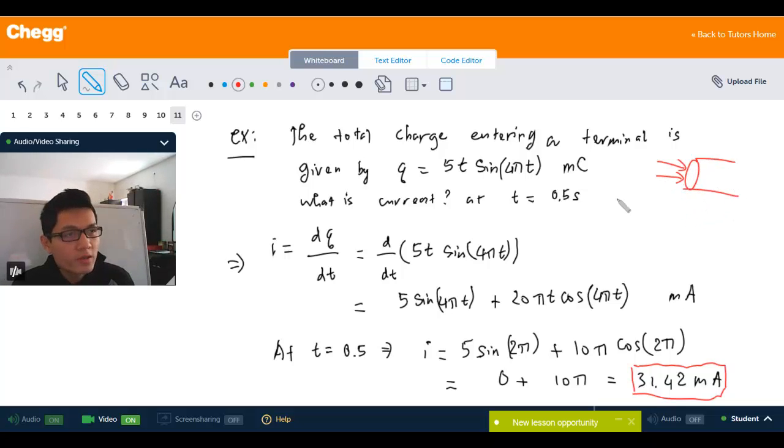And you want to measure the current at a time t equals 0.5 seconds. For example, we're going to measure right here t equals 0.5 seconds. So what is the current?